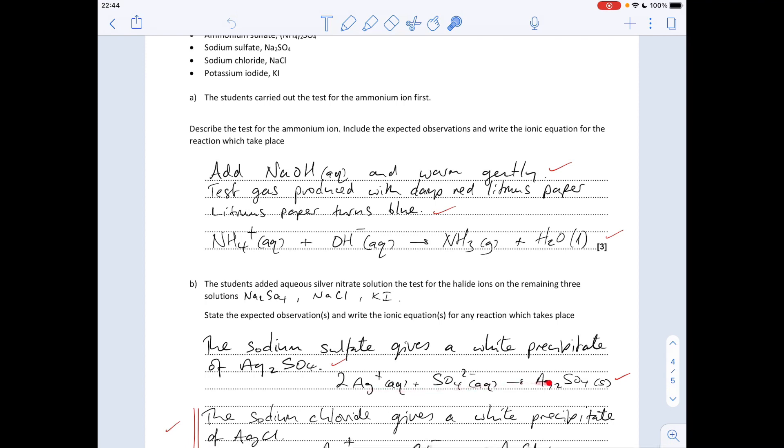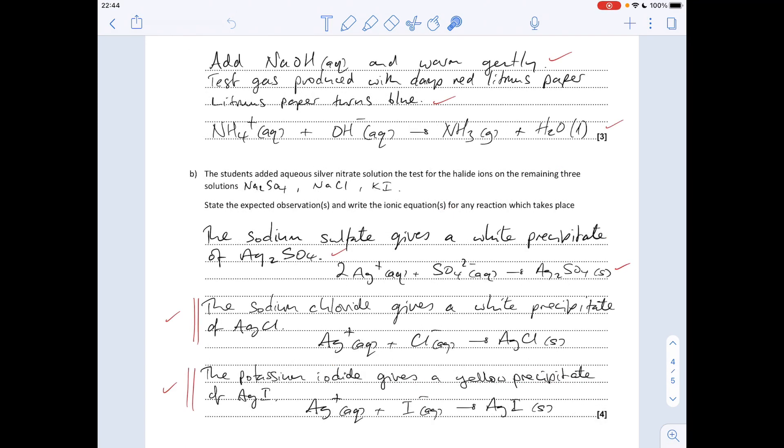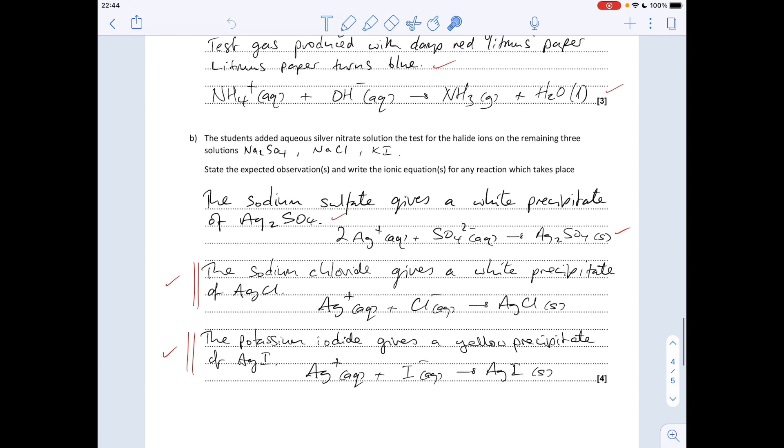Sodium chloride would give a white precipitate of silver chloride, there's the ionic equation for that. So marks wise you'd need that statement and the ionic equation. And likewise the potassium iodide would give a yellow precipitate of silver iodide and there's the ionic equation for that. Both of these statements for the mark.